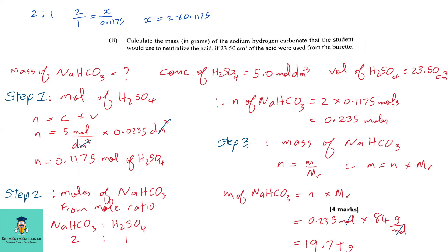Step three: find the mass given the moles calculated. Mass equals moles times molar mass. The mass of sodium hydrogen carbonate equals 0.235 moles times 84 grams per mole — the molar mass given in the question. So our answer for the mass of sodium hydrogen carbonate is 19.74 grams.